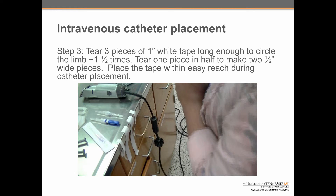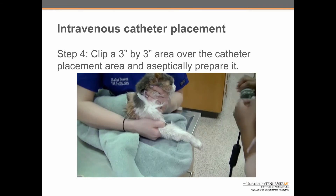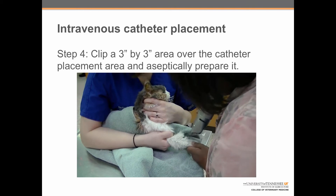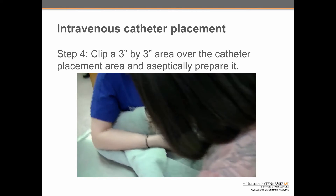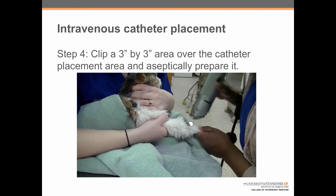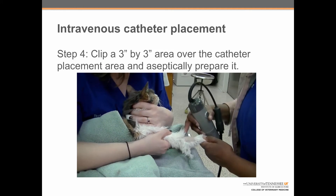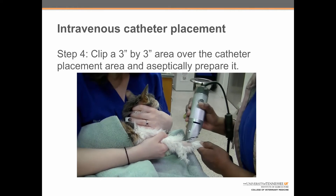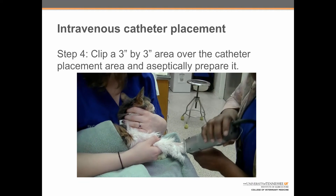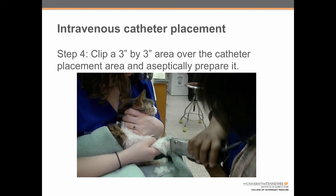Step 4: clip a three-inch by three-inch area over the catheter placement site and aseptically prepare it. Here we can see Shanna turn the clippers on. She took the clippers away from the cat when she started them so they wouldn't be frightening, and then brought them back in to clip thoroughly. It is very important that you clip a full three-by-three-inch area on top of the limb. Some people also clip around the back side of the limb to prevent hair from interfering with the tape, though clipping the front and top thoroughly is essential.